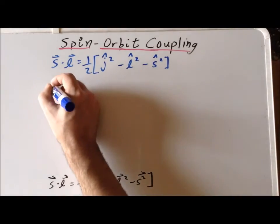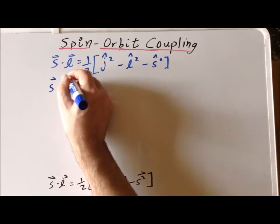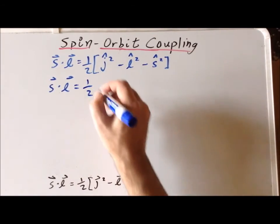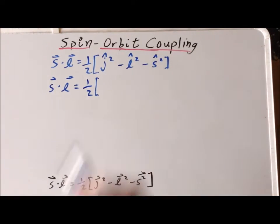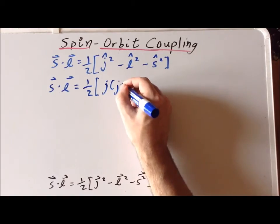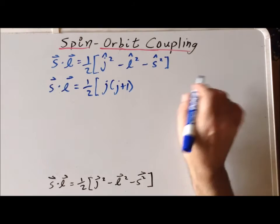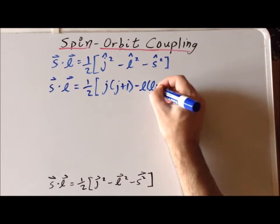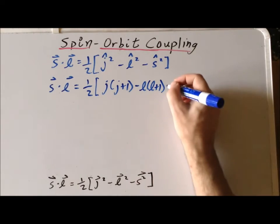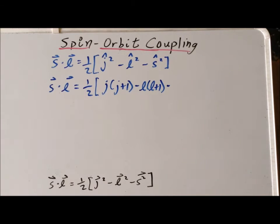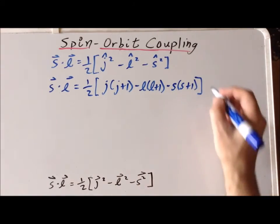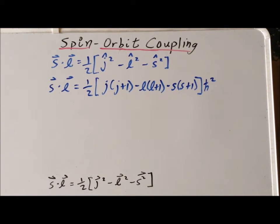Next, to find the value of this interaction, we are going to replace the operators on the right-hand side by the appropriate eigenvalues. Recall that the eigenvalue for the J squared operator is J(J+1) times h-bar squared. Similarly, the eigenvalue of the L operator squared is L(L+1) times h-bar squared. And the eigenvalue for the S squared operator is S(S+1) times h-bar squared. Since we have an h-bar squared for each factor, we simply factor that out and put it on the right-hand side outside of the brackets.